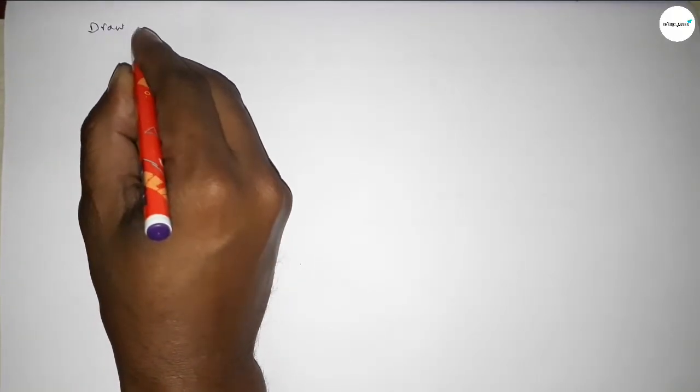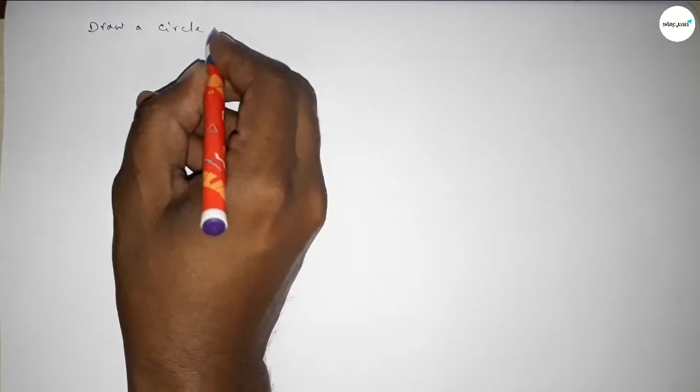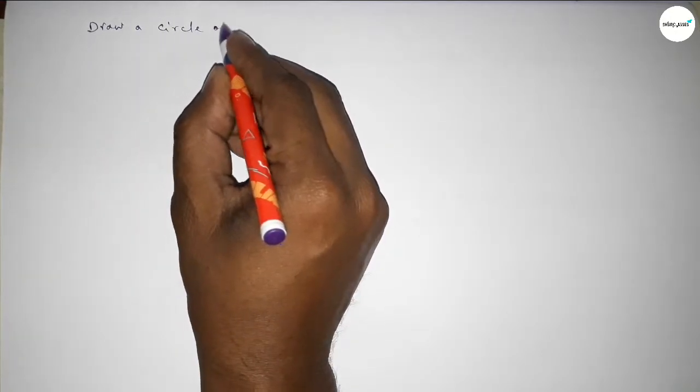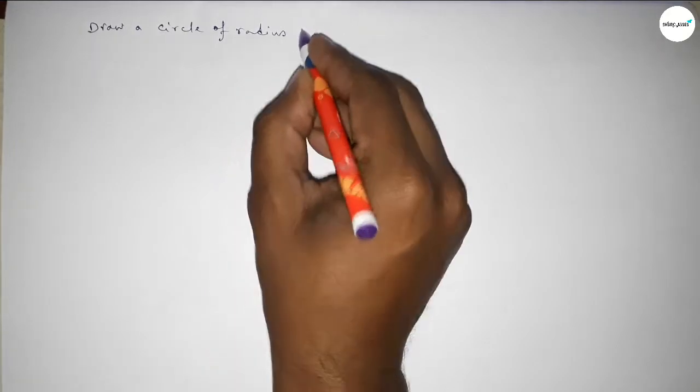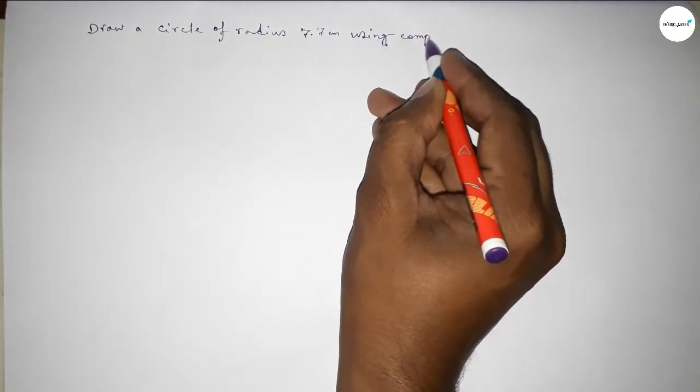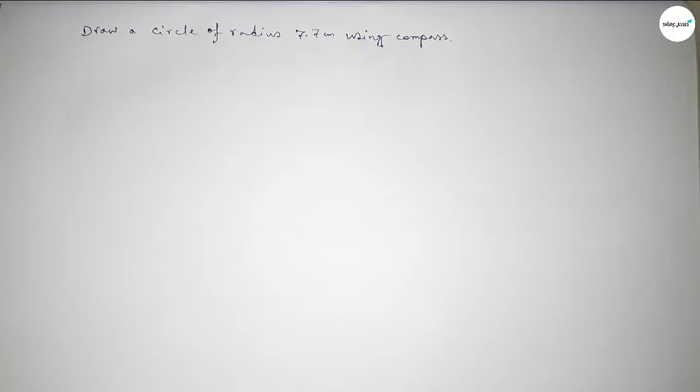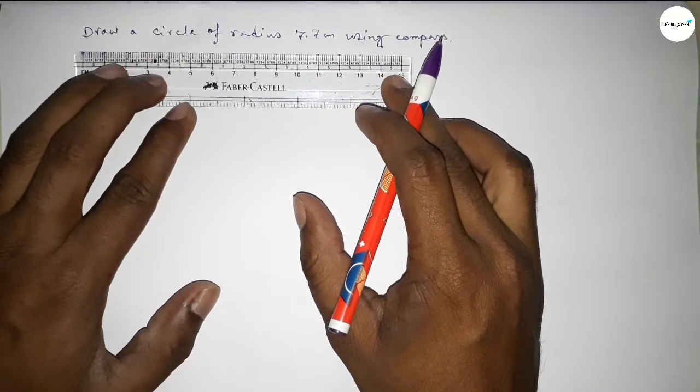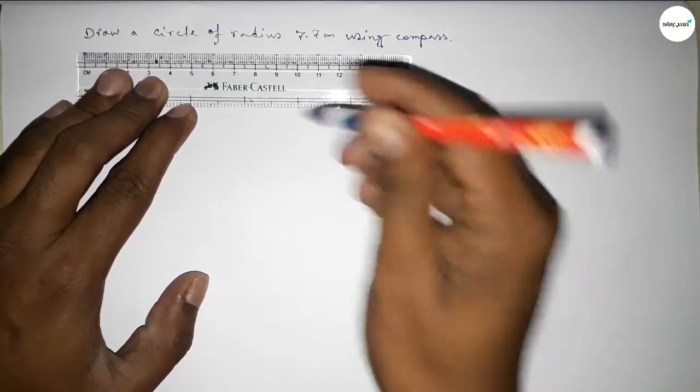Hi everyone, welcome to SI Share Classes. Today in this video we have to draw a circle of radius 7.7 centimeters. So let's start the video. First of all, we have to draw a line of length 7.7 centimeters.